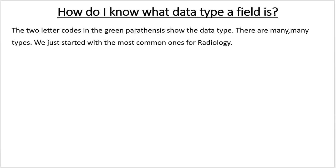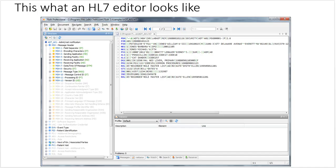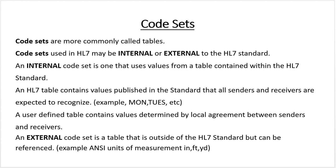Post something on the discussion board if you have questions about the code sets or the concepts. I feel like I went through the code sets kind of quickly, so I'm going to go back and do it one more time. Code sets are tables. They can be internal, external, or user-defined. Internal: a table of codes already inside HL7. External: a table of standard things like units of measurement that everybody knows but is external to the HL7 standard. User-defined: something two, three, four, or however many users are involved come up with on their own and build into HL7.